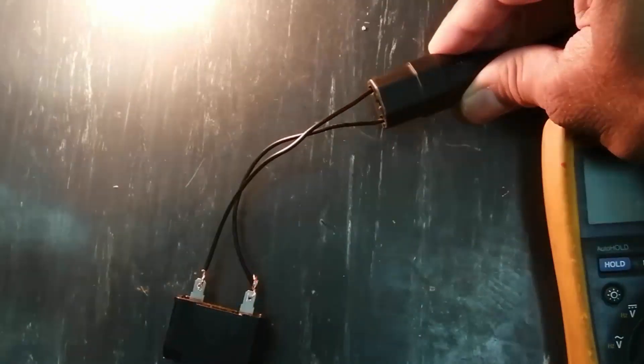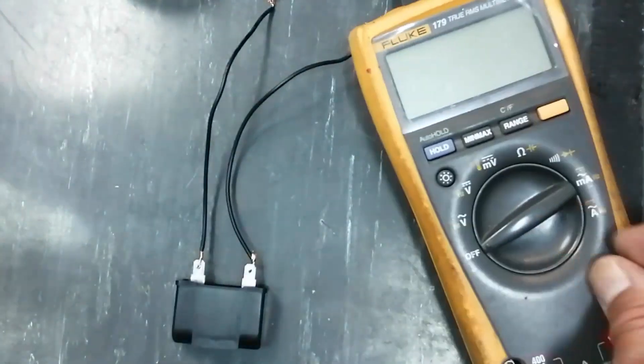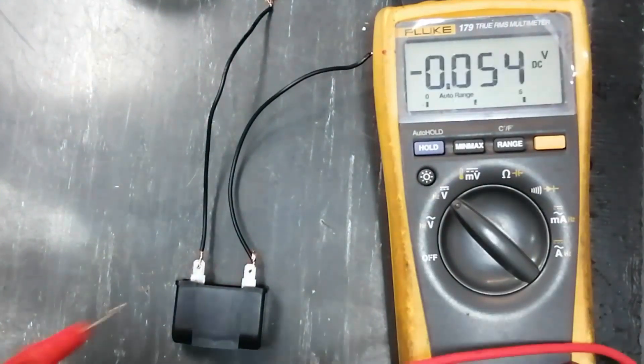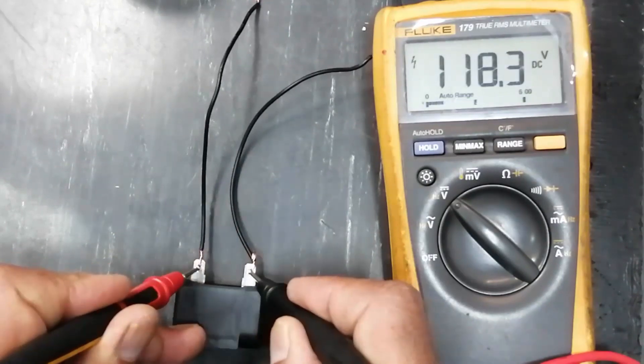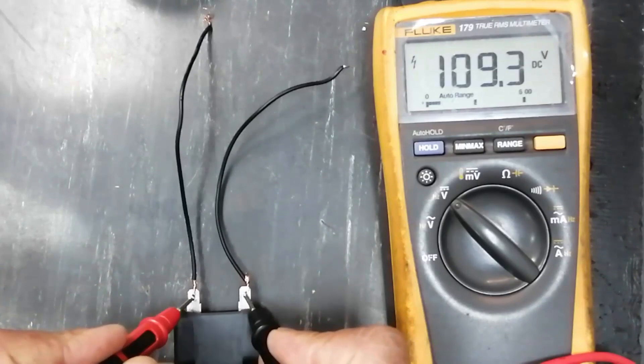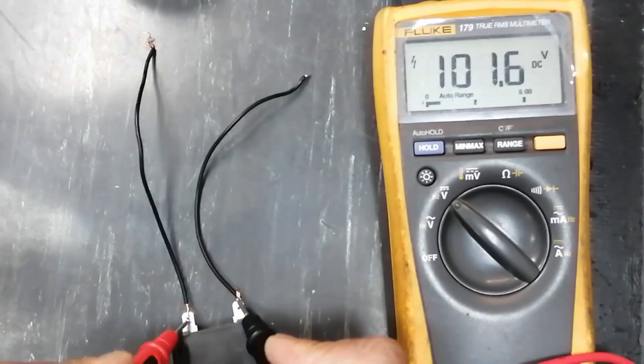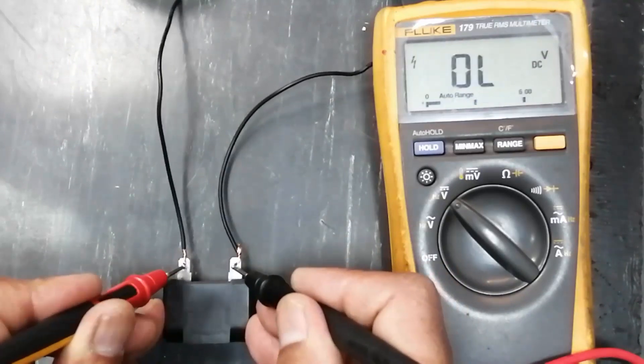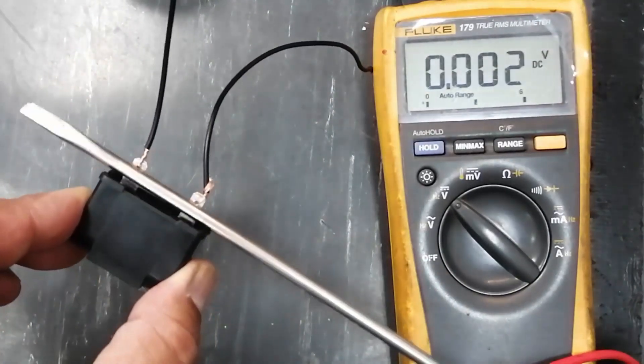Set the multimeter to DC volt and connect to the terminals. We can see it has 116, 115 volts, so it is charged. Still, I removed it and it has voltage. So this is the reason we always have to make short.